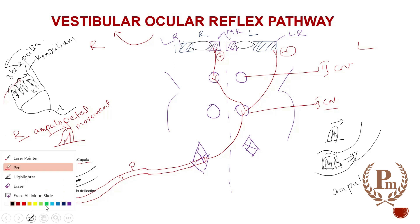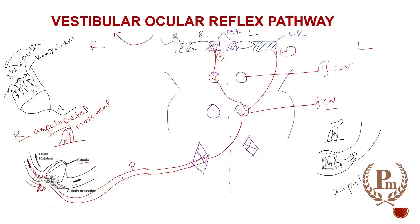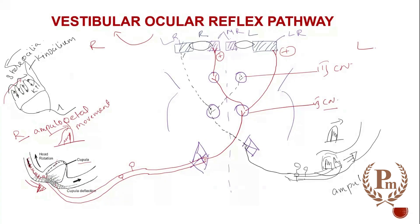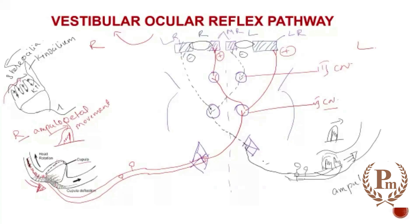Now for the inhibitory pathway: from the left semicircular canal, the afferent fibers travel through the vestibulocochlear nerve to the medial vestibular nucleus. From there, inhibitory fibers cross and go to the sixth cranial nerve on the opposite side, which goes to the lateral rectus. Via the medial longitudinal fasciculus, fibers also travel to the third cranial nerve — this is the inhibitory pathway.